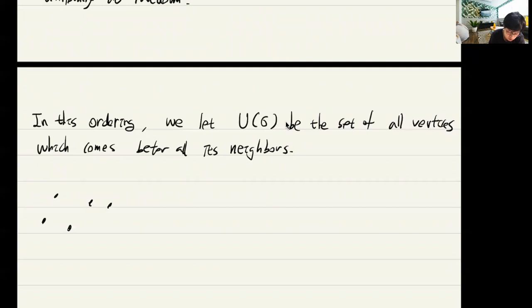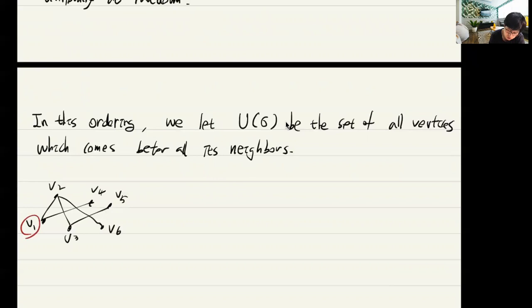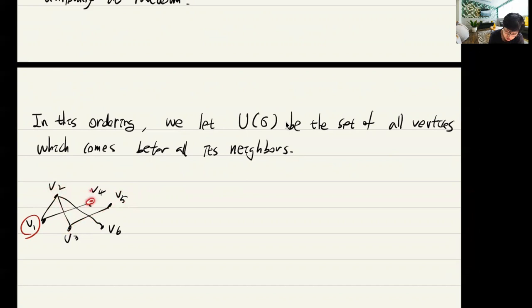For example, consider vertices v1, v2, v3, v4, v5, v6 in this ordering with some edges. v1 is in U because its neighbors v2 and v4 are all after v1. v2 is not in U because it has a neighbor v1 which comes before it. Similarly, v3, v4, v5, v6 are not in U in this ordering.